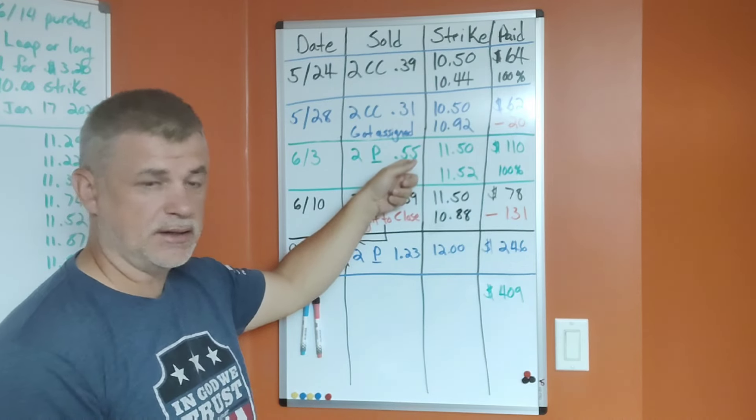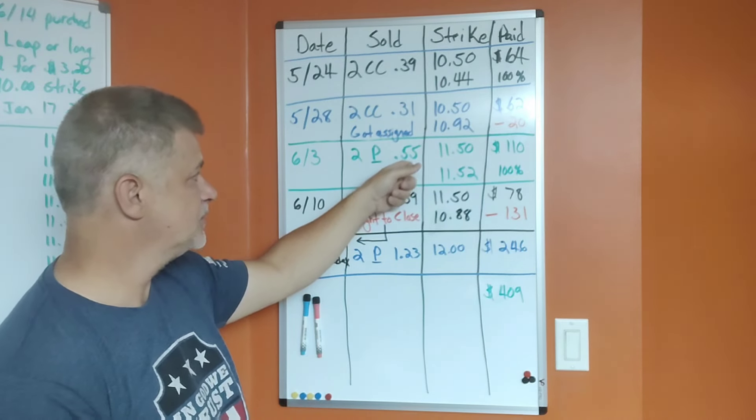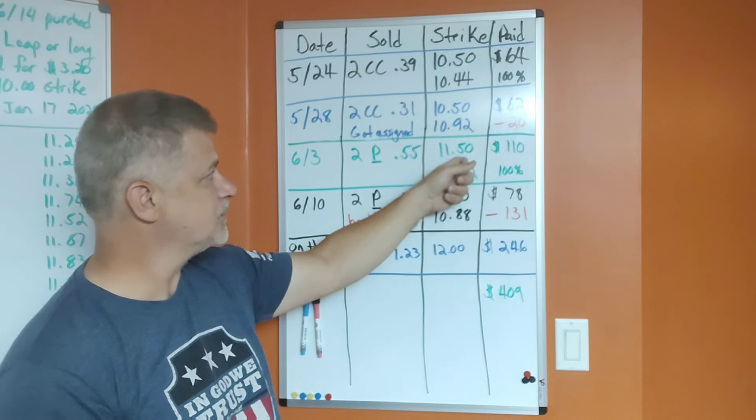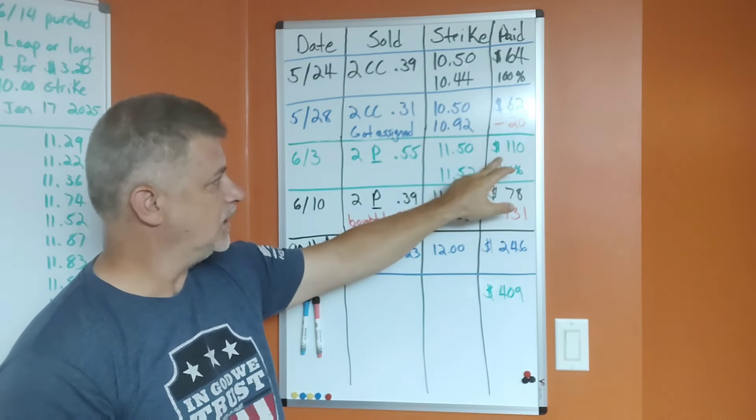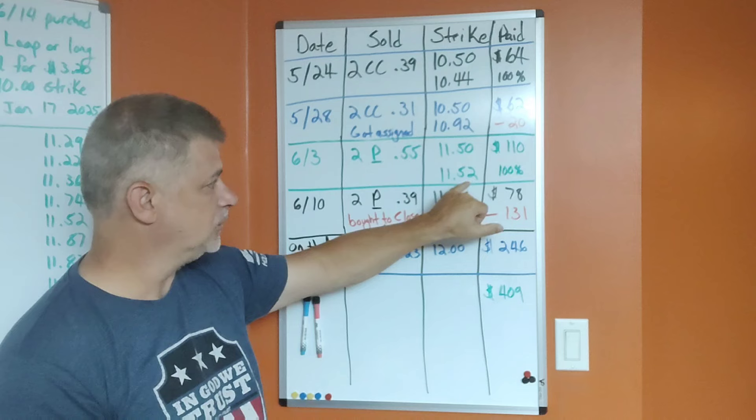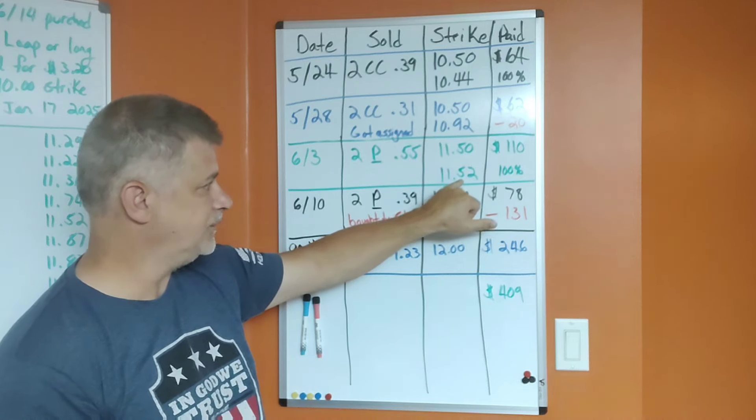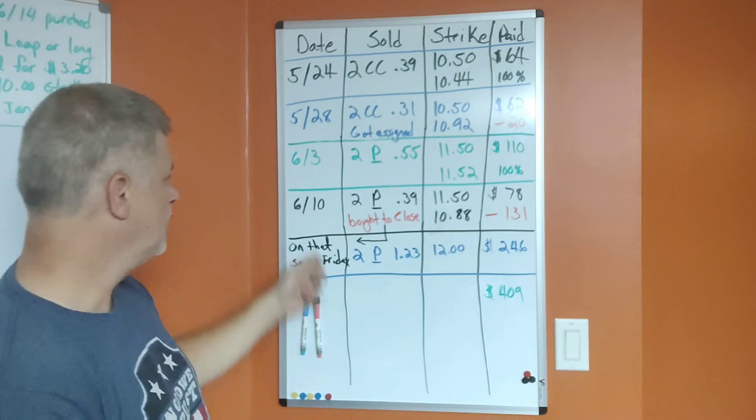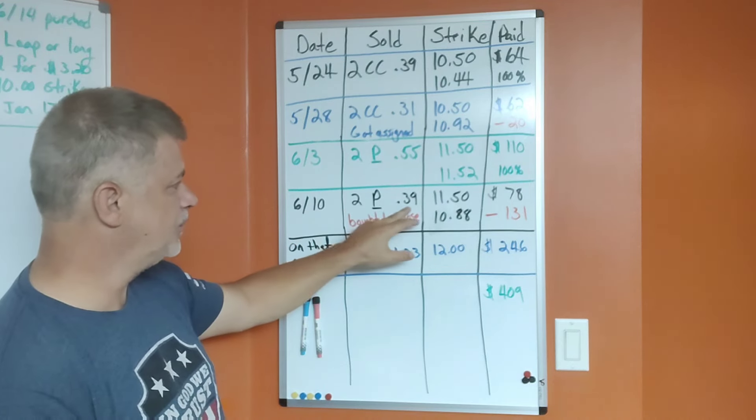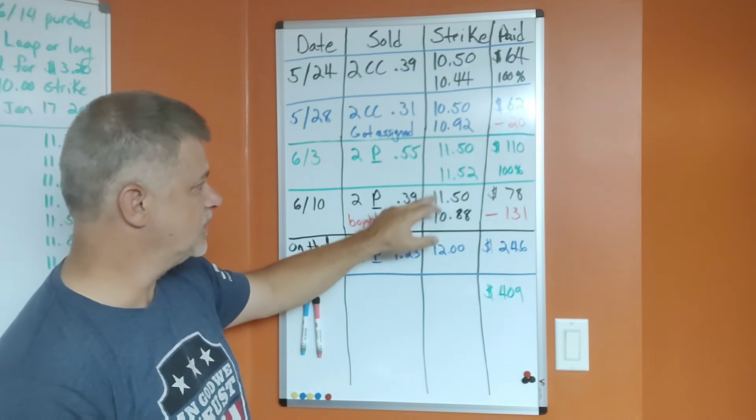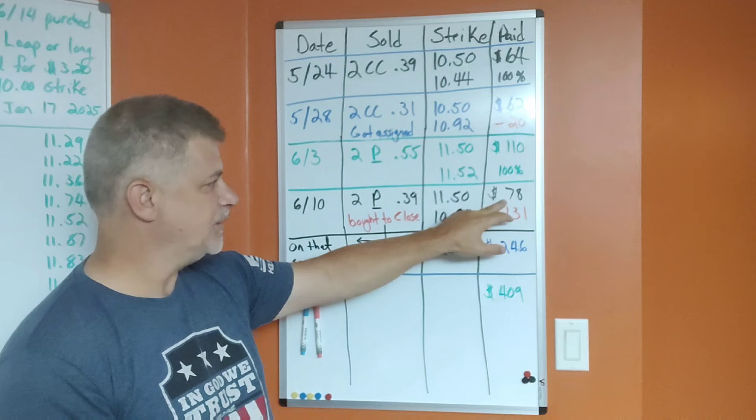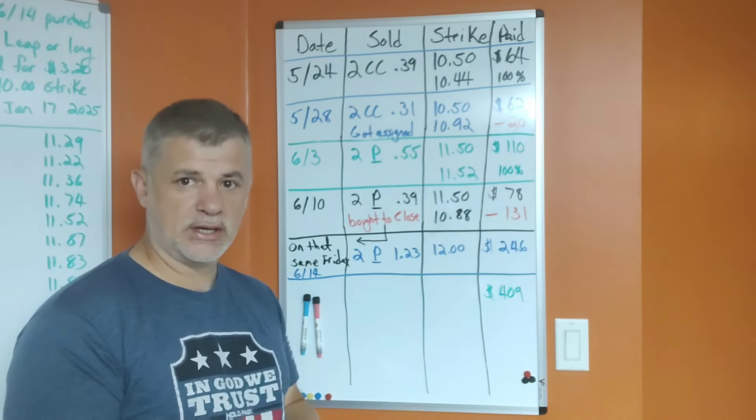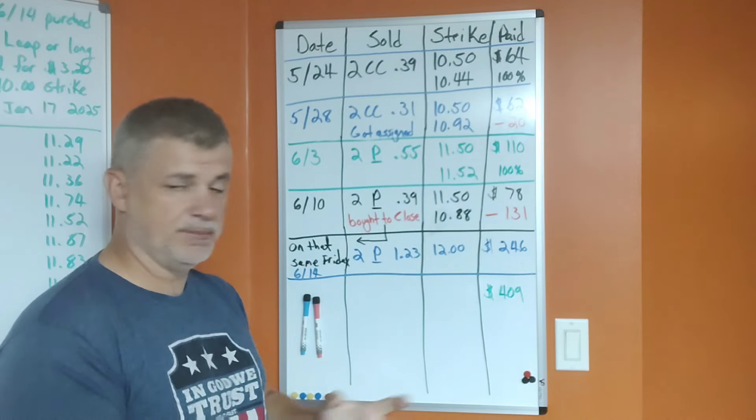On June 3rd, I sold two puts for $0.55. So after I got assigned, I just turned right back around, started selling puts at the $11.50 strike price. Now this is a dollar higher, you can see, and I got paid $110. It closed above $11.50, so I got to keep 100% of that. On June 10th, I sold two puts for $0.39 for $11.50—same strike price—got paid $78.